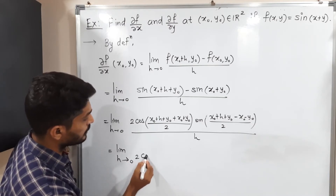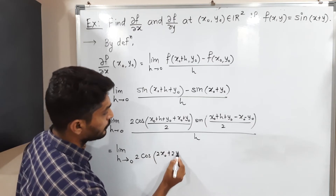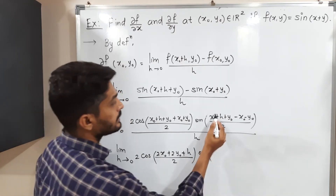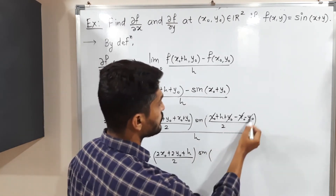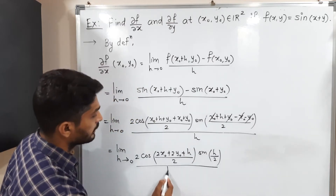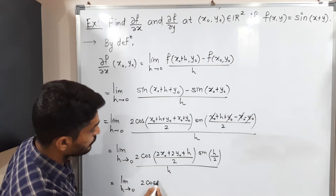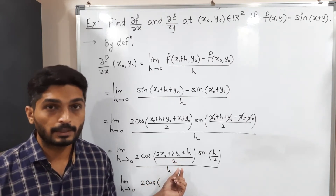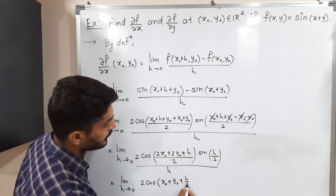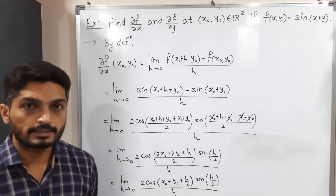Simplifying the cosine argument: x₀ + x₀ = 2x₀, y₀ + y₀ = 2y₀, so we have 2 cos[(2x₀ + 2y₀ + h)/2] · sin(h/2) divided by h. Dividing separately inside the cosine: 2x₀/2 = x₀ and 2y₀/2 = y₀, leaving cos(x₀ + y₀ + h/2). We now have 2 cos(x₀ + y₀ + h/2) · sin(h/2) divided by h.